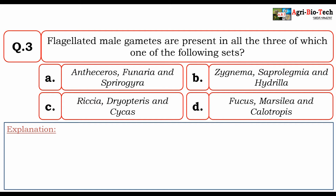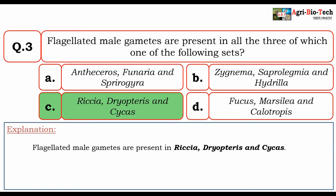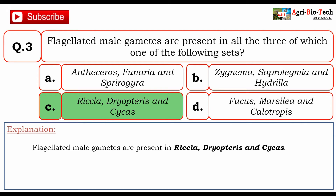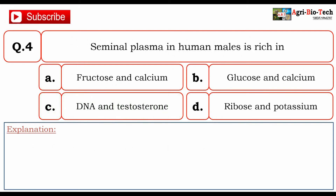Next question: flagellated male gametes are present in all three of which one of the following sets? The options are: anthoceros, funeria, and spirogyra; zygnema, saprolegnia, and hydrilla; riccia, dryopteris, and cycas; and fucus, marsilea, and calotropis. The correct option is C: riccia, dryopteris, and cycas, as flagellated male gametes are present in all three of these.